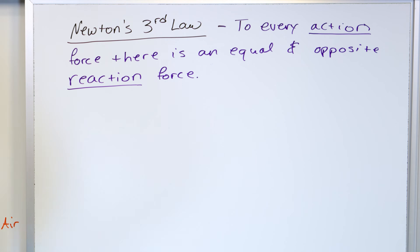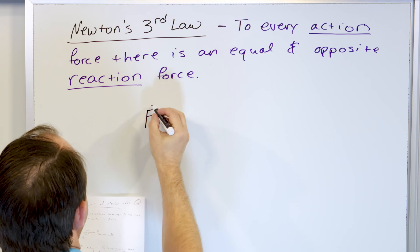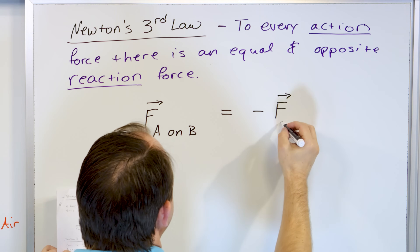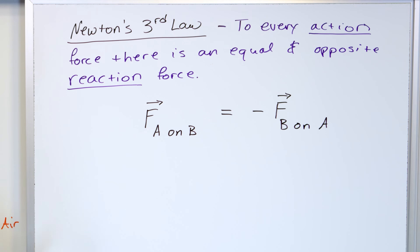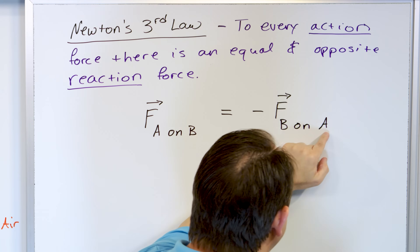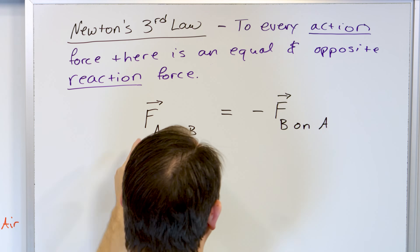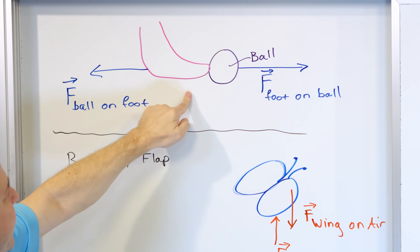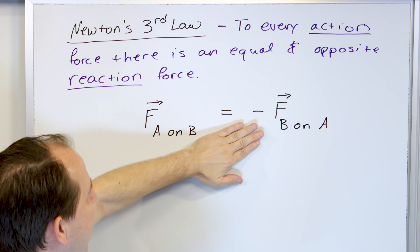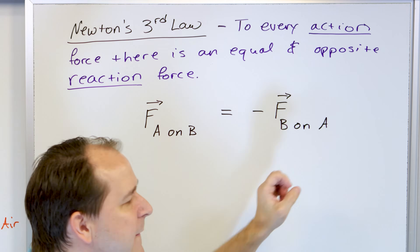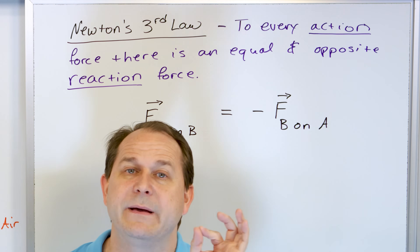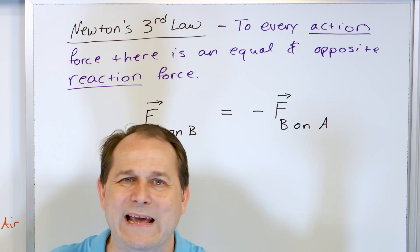The way you would mathematically write that is: the force of object A acting on object B is equal to the negative of the force of object B acting on A. What does this mean? The force of my foot acting on the ball is exactly equal in magnitude to the force of the ball acting on my foot, but the negative sign means it's in the exact opposite direction. This force would be in the positive direction; this force would be in the negative direction. But this equation doesn't emphasize that they're acting on totally different objects - foot and ball are different objects, wing and air are different objects.